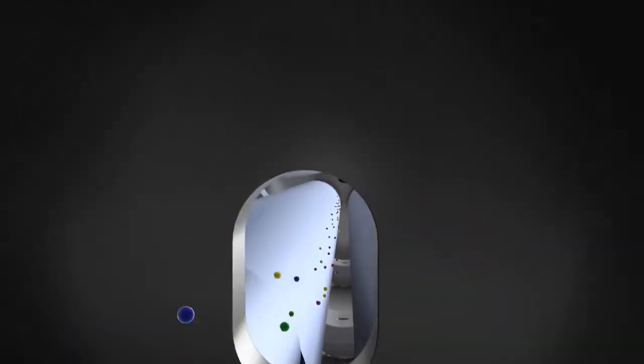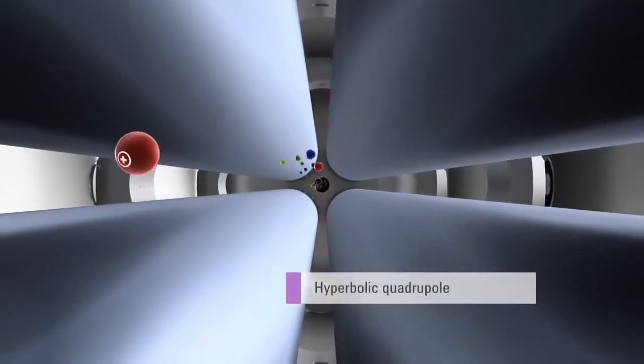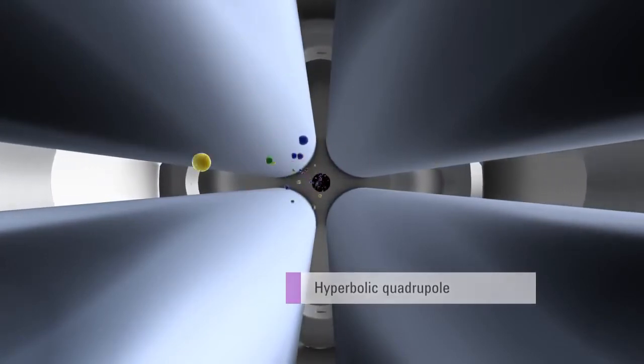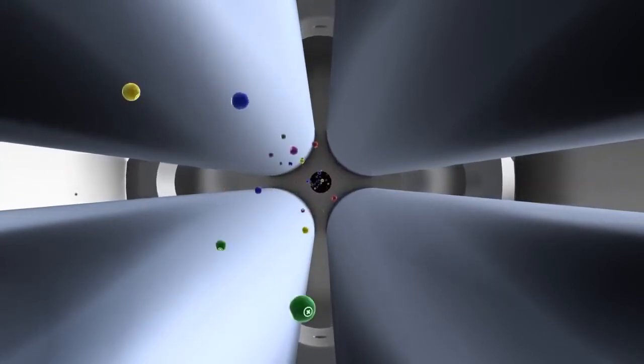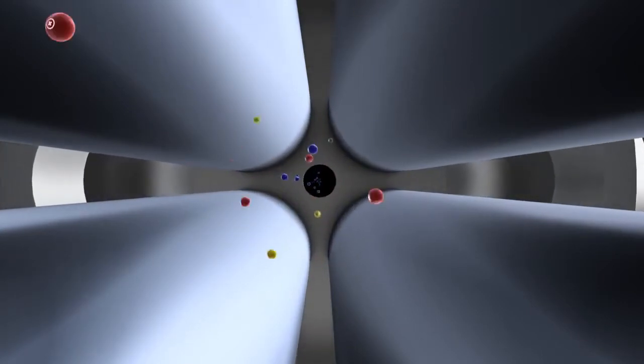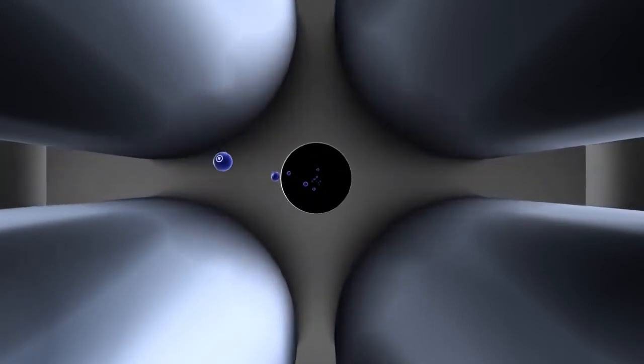From the collision reaction cell, the ions pass into the quadrupole mass analyzer, which separates ions based on their mass-to-charge ratio. The 7700 is unique in using a high-frequency 3 MHz hyperbolic quadrupole. These features combine to give improved peak separation and higher transmission, providing the 7700 with the best abundance sensitivity specification of any quadrupole ICP-MS.